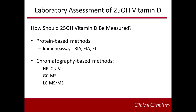Once it is understood what to measure, the next step is to choose how to measure it. Available methods for vitamin D measurement include radioimmunoassays, enzyme-linked immunosorbent assays, enhanced chemiluminescence, and protein binding assays. Also available are chromatography-based methods including HPLC, GC-MS, and LC-MS/MS.